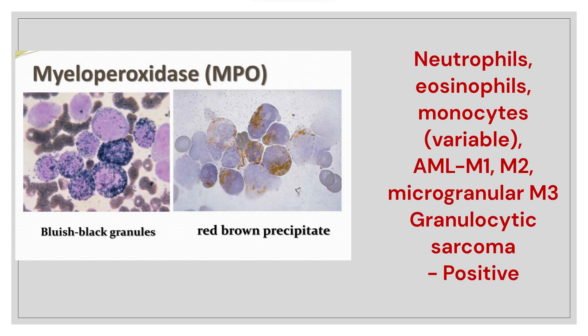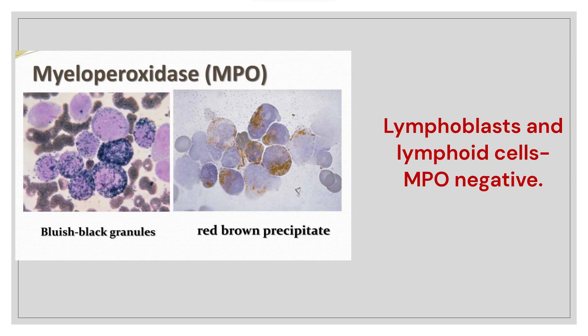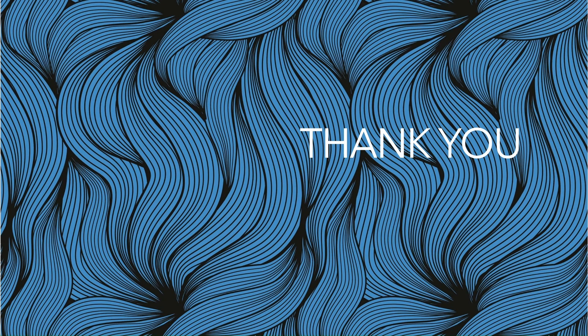AML M1, M2, and microgranular M3, and granulocytic sarcoma all stain MPO positive. Lymphoblasts and lymphoid cells are MPO negative. This is in short about myeloperoxidase stain. Thank you for watching. See you in the next video.